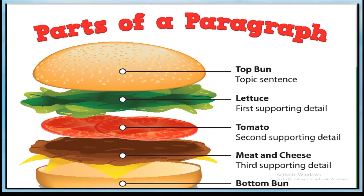Now let's learn to identify the parts of a paragraph with this colorful poster. This poster shows the shape of a bun. The first sentence is the topic sentence — this sentence tells the reader the main idea or what the paragraph will be about. The next part is supporting sentence one, which gives specific details relating to the main idea.